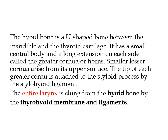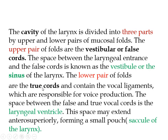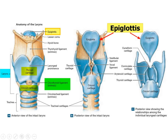The hyoid bone is a U-shaped bone between the mandible and the thyroid cartilage. It has a small central body and long extensions to each side called the greater cornua or horns, with smaller lesser cornua arising from the upper surface. The tip of each greater cornu is attached to the styloid process by the stylohyoid ligament. Notably, the hyoid bone is the only bone in the body that does not articulate with any other bone — it is suspended by ligaments and muscles, with no joints and no direct contact with other bones.